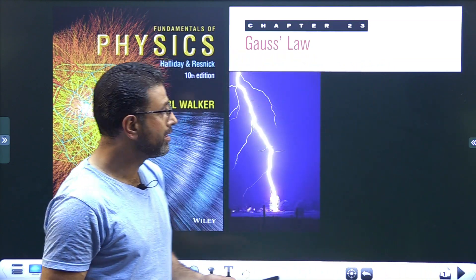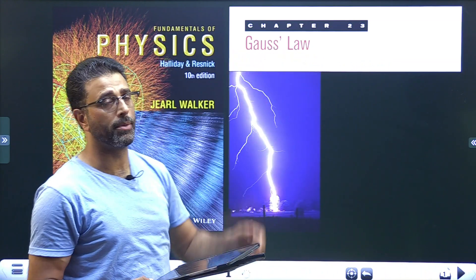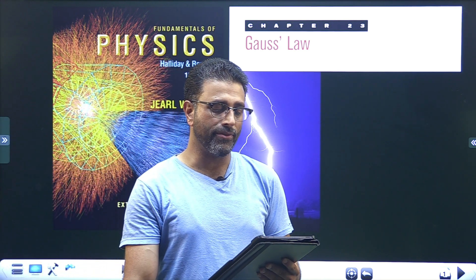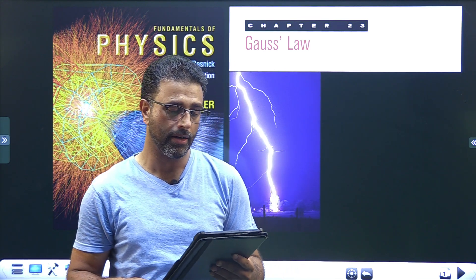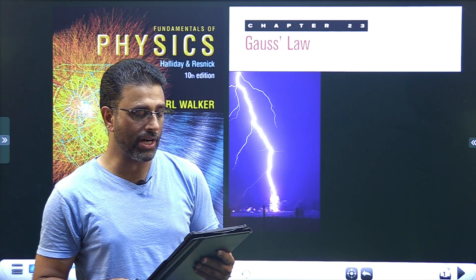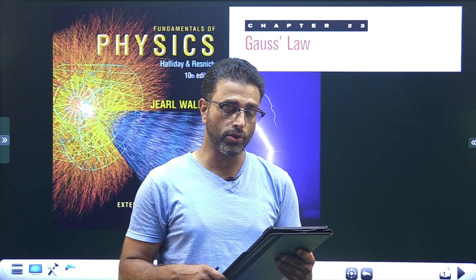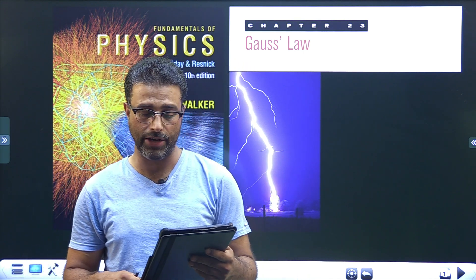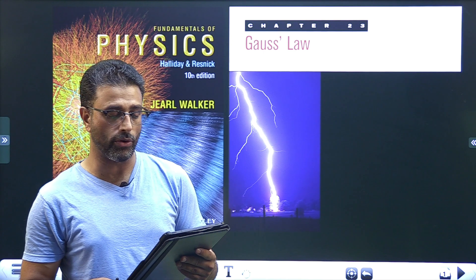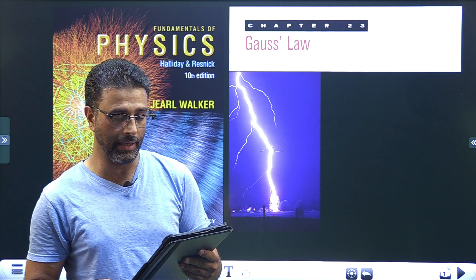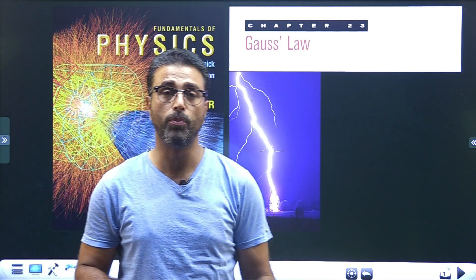Hey guys, question number 9, Gauss Law, chapter number 23. Let me read out the question. A small charged ball lies within a hollow of a metallic spherical shell of radius R. For three situations, the net charge on the ball and the shell respectively are: first situation +4Q and 0; second situation -6Q and +10Q; and third situation +16Q and -12Q. Rank the situations according to the charge on part A, the inner surface of the shell, and part B, the outer surface, most positive first.